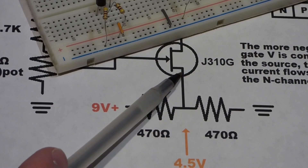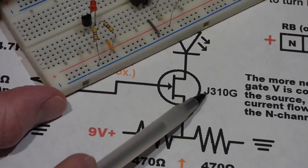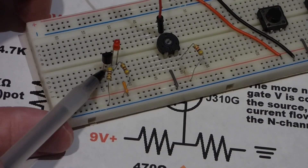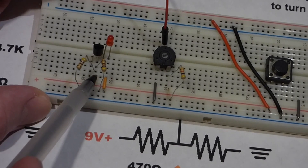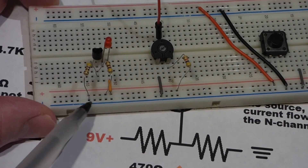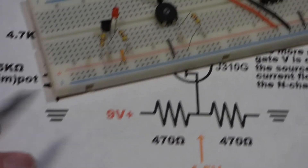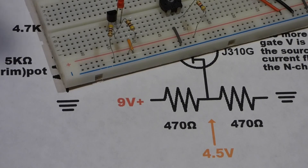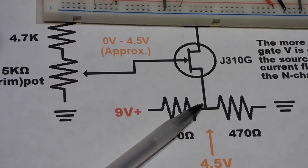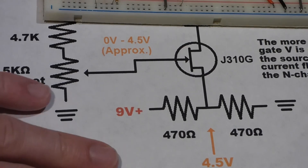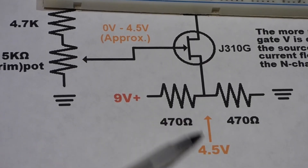The source terminal on the schematic is the lower one. On the J310 N-channel JFET transistor it's the middle pin — the middle pin either way you're looking at it. You can see the two resistors are plugged into the same row: one goes to positive, one goes to negative, putting 4.5 volts on that pin. The reason we're not putting this directly to ground is because this is not going to be the lowest voltage pin of this transistor. To get this circuit to work, I had to make it not go directly to ground.